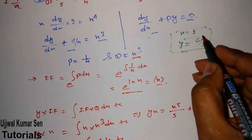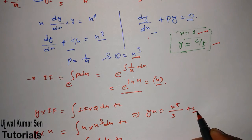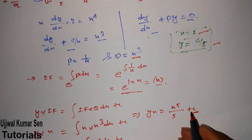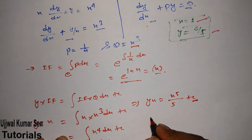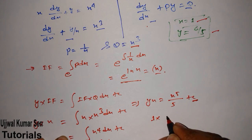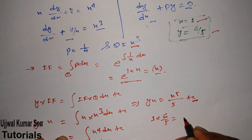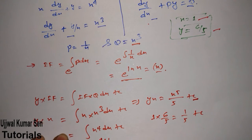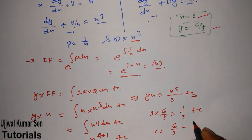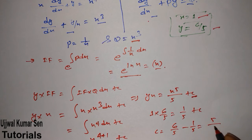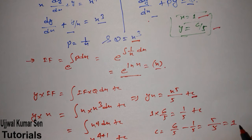By using the initial condition values, we can get the value of C. Put x = 1 and y = 6/5: 1 times 6/5 = 1/5 + C. So C = 6/5 minus 1/5 = 5/5 = 1. The value of C is 1.